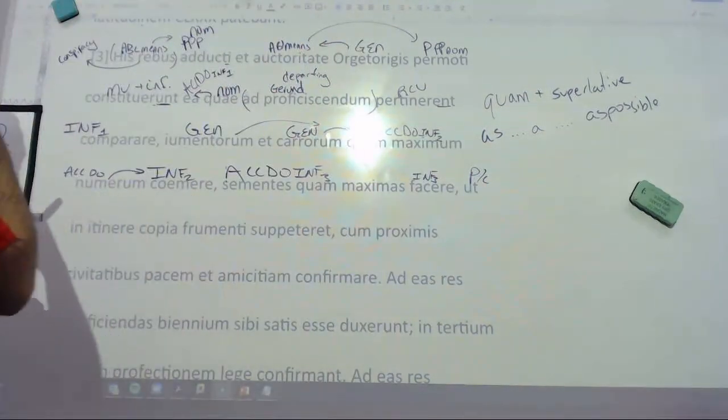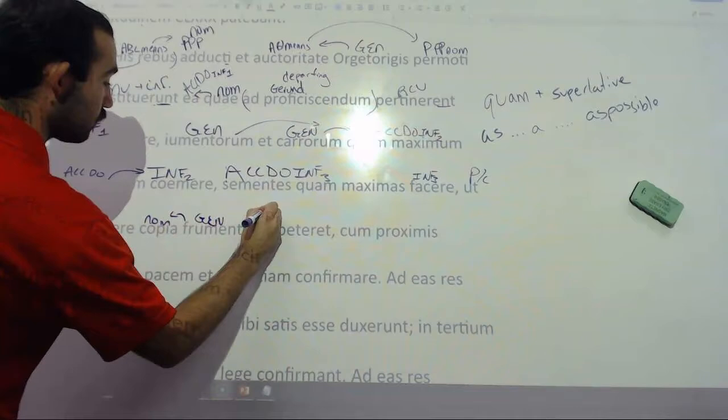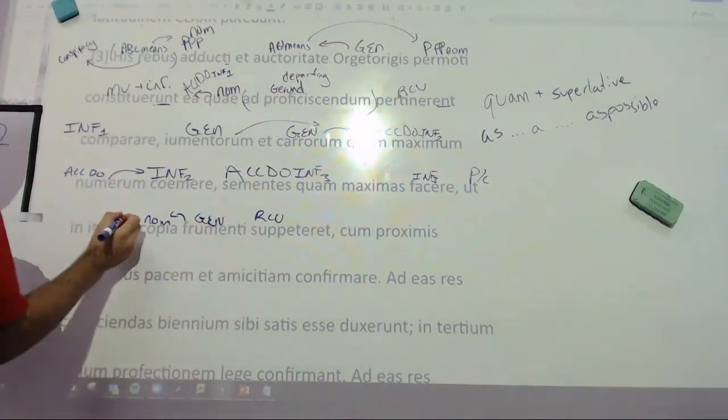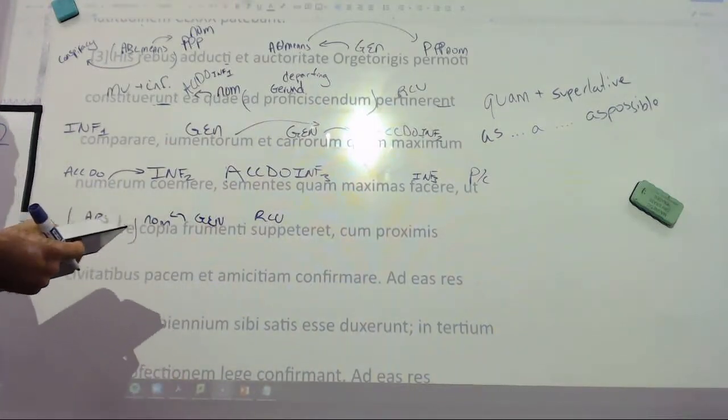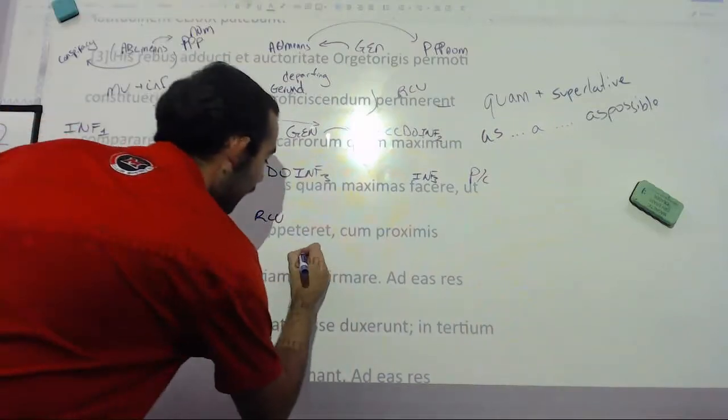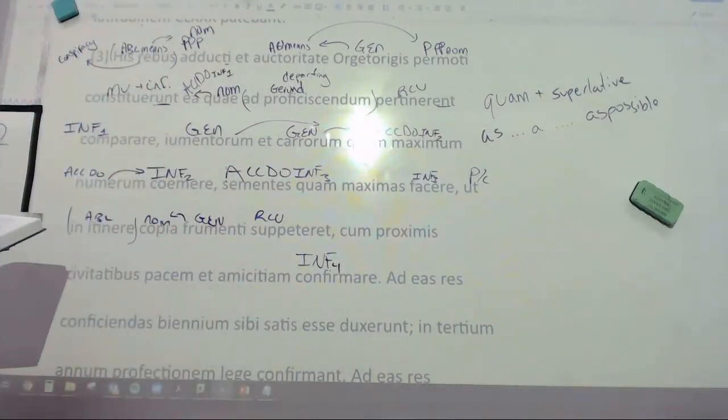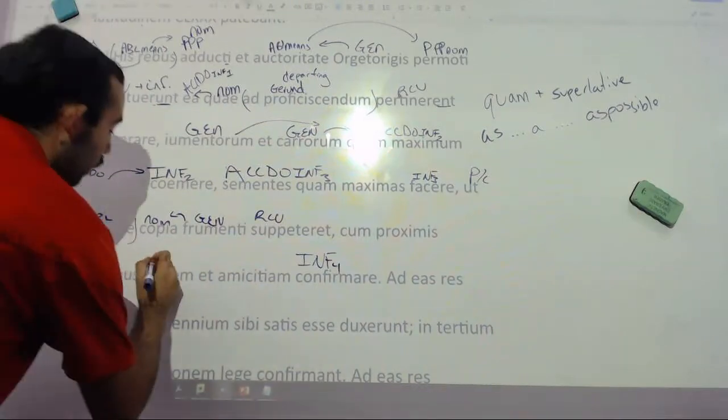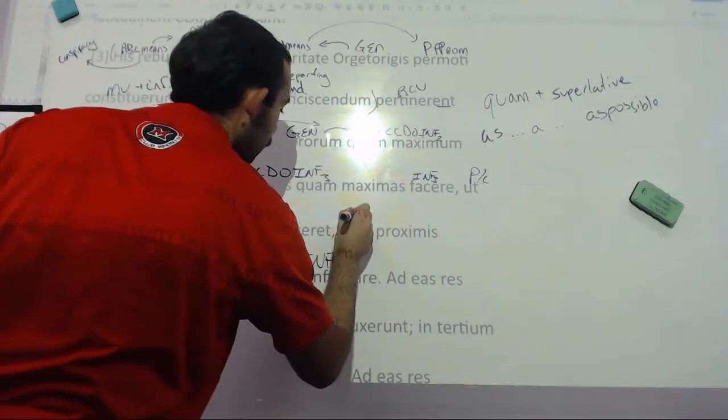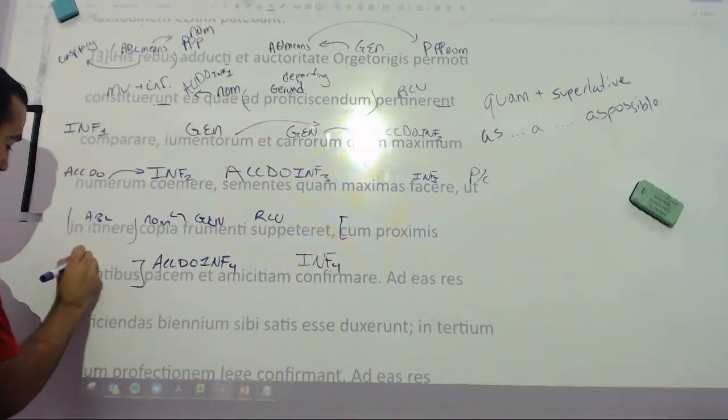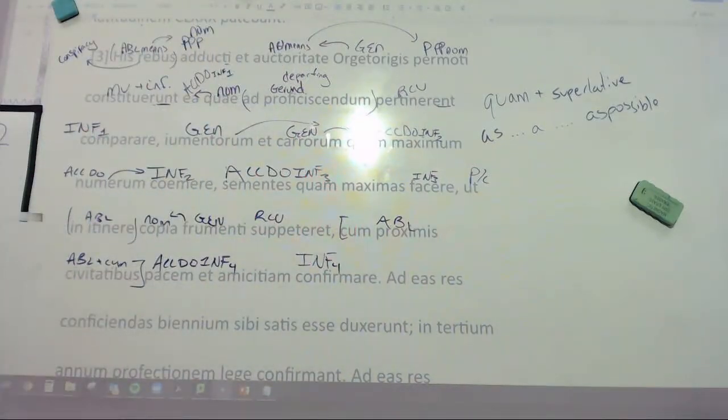Ut is a purpose clause here, so that the supply of grain is in stock on their journey. Qum here is going to be with, because I see civitatibus, and that's kind of like people, and I see confirmare, which is our last infinitive, this is infinitive number four. And they're going to decide to confirm, or the book puts here, to establish a treaty or peace and friendship with the nearest states. I'll put a little ablative plus qum there. So those are the things they had in mind.